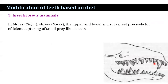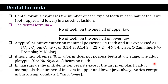Among insectivorous mammals such as moles, the upper and lower incisors are precisely made for apical capturing of small prey like insects. The dental formula expresses the number of each type of teeth in each half of the jaw, both upper and lower, in a succinct fashion. The dental formula gives the number of teeth on one half of the upper jaw over one half of the lower jaw. A typical primitive eutherian mammal possesses 44 teeth, expressed as incisor 3/3, canine 1/1, premolar 4/4, and molar 3/3, or simply as 3143/3143.